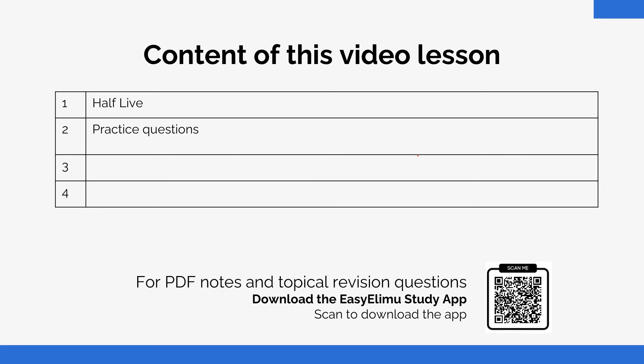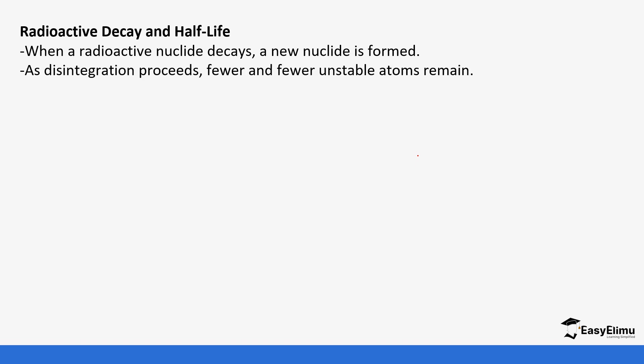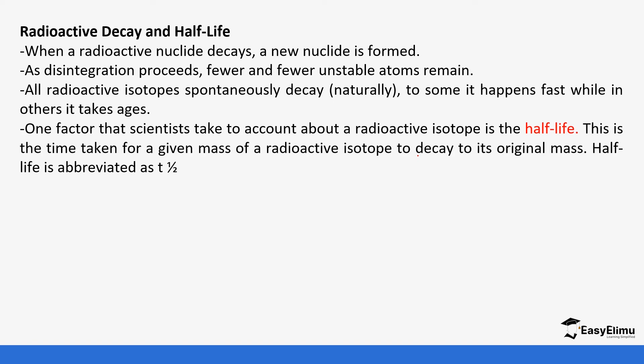We're going to be looking at how to calculate half-lives and do a few calculations. So when a radioactive nucleus decays, a new nucleus is formed. As disintegration proceeds, fewer and fewer unstable atoms remain. All radioactive isotopes spontaneously decay. To some it happens fast while others it takes a lot of time. One factor that scientists take into account is the term half-life.